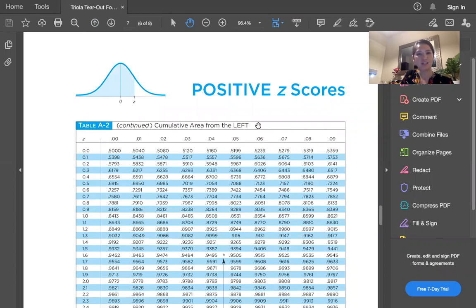Z is 1.92 and we're looking for the area to the left. Remember, area to the left is the same as probability. Probabilities and areas correspond with each other in chapter six.